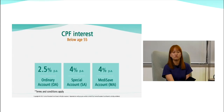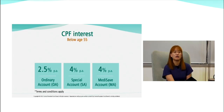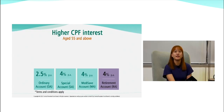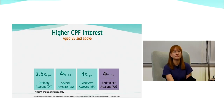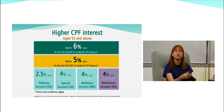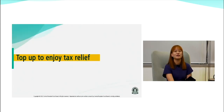A brief overview of interest rates: if you are below age 55, you have three savings accounts — OA, SA, and MA — earning 2.5% or 4% per annum. On the first 60,000 of your combined CPF balances, you can earn up to 5% per annum. For those aged 55 and above, a Retirement Account is set up. On the first 30,000 of combined CPF balances, you can earn up to 6% per annum, and the next 30,000 earns up to 5%.